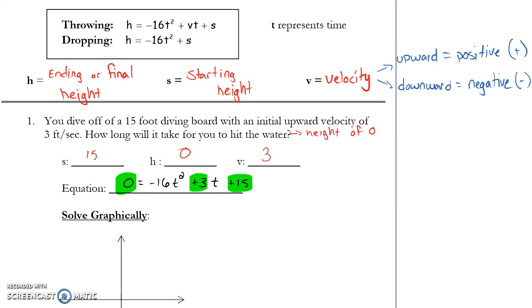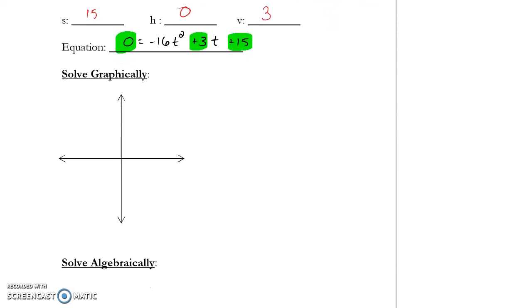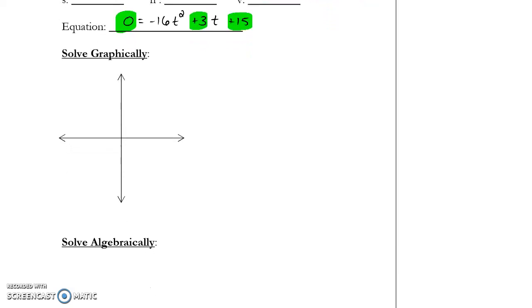And there are two ways to solve this now. We could solve this by graphing. In that case, I'm putting zero in for y1, negative 16t squared plus 3t plus 15 into y2. But I'm not using t, so t is equal to x when I put this into my graphing calculator. So let's go ahead and do that and get a sketch of what this graph is going to look like. Press pause and put that in your calculator.